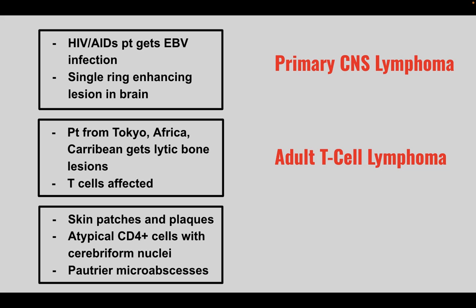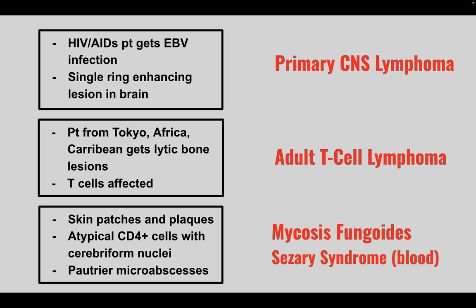Next is a patient that presents with skin patches and plaques, atypical CD4 cells with cerebriform nuclei, and Pautrier microabscesses. This is called mycosis fungoides if it's limited to the skin. If it affects the skin and the blood, it's called Sézary syndrome.